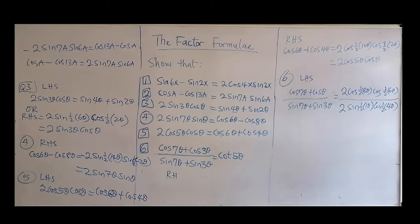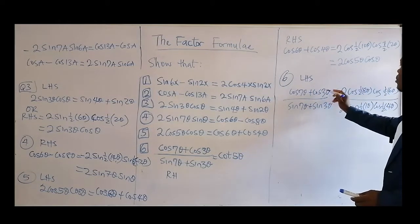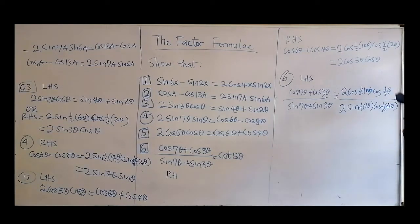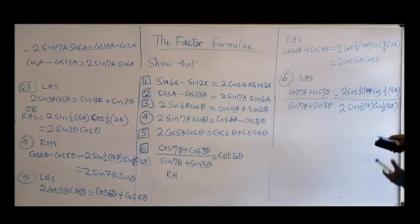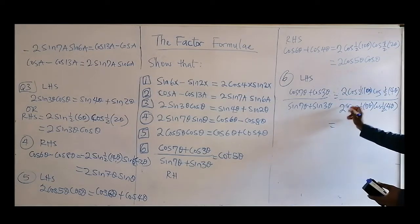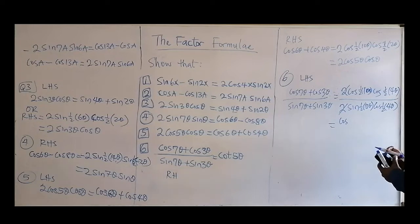Let me recheck — I made a mistake; this is not θ but 3θ. So denominator: 2sine of half of 10θ = 5θ, times cosine of half of 4θ = 2θ. That gives 2sin(5θ)cos(2θ). Now the fraction is 2cos(4θ)cos(3θ) divided by 2sin(5θ)cos(2θ).